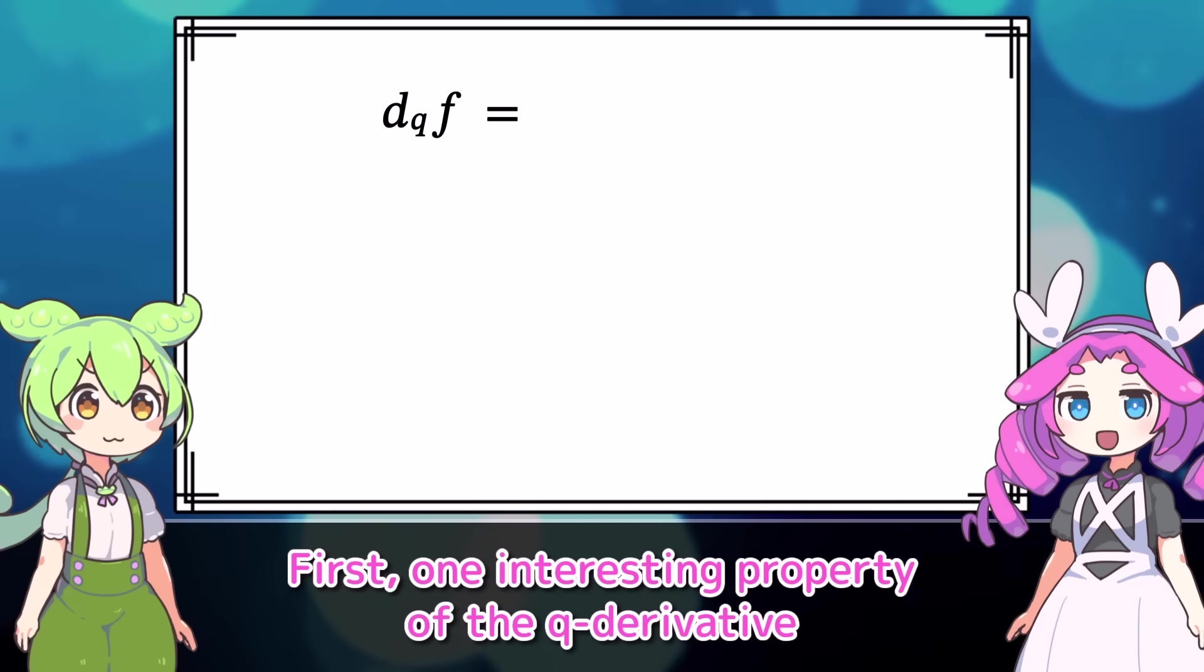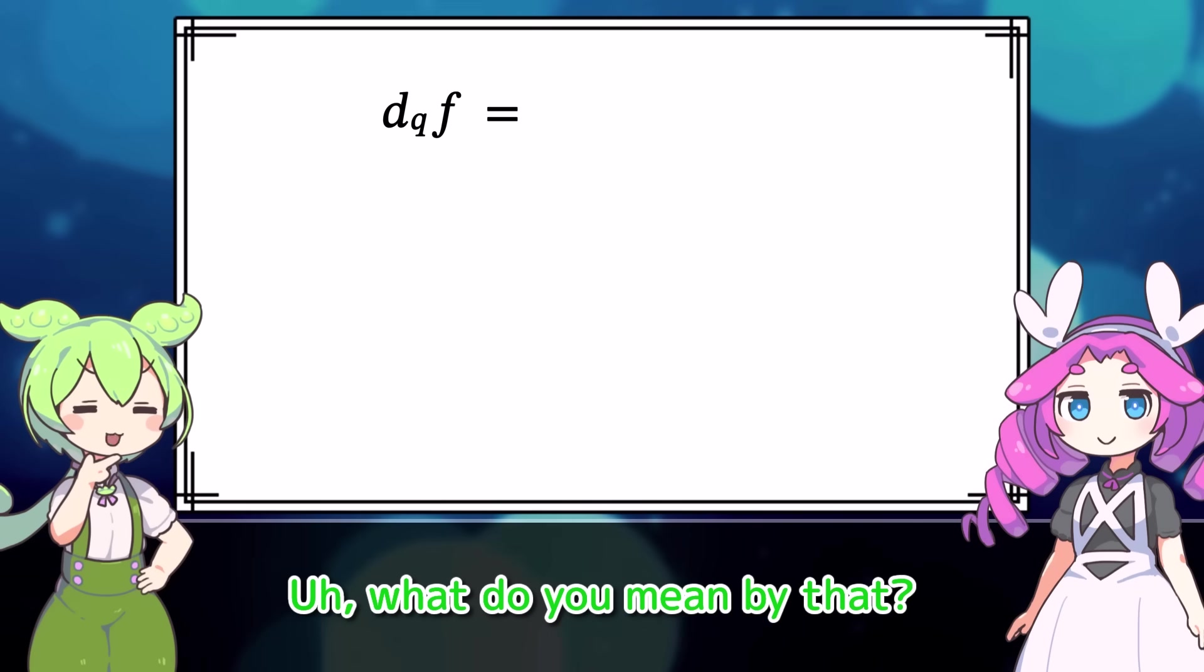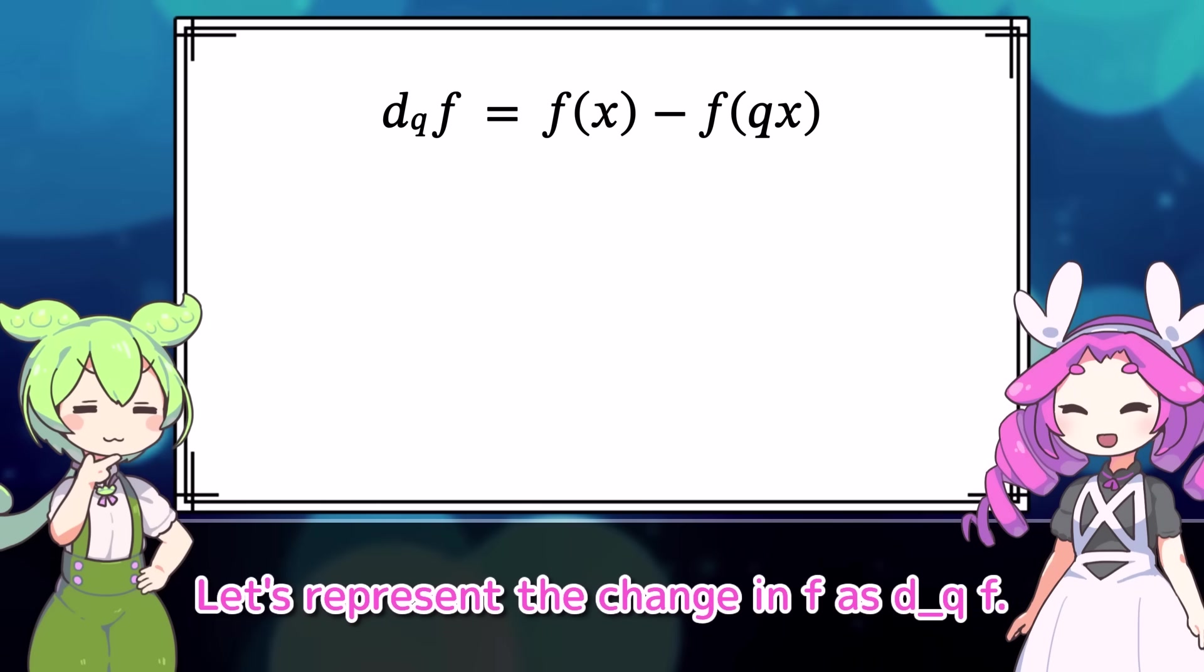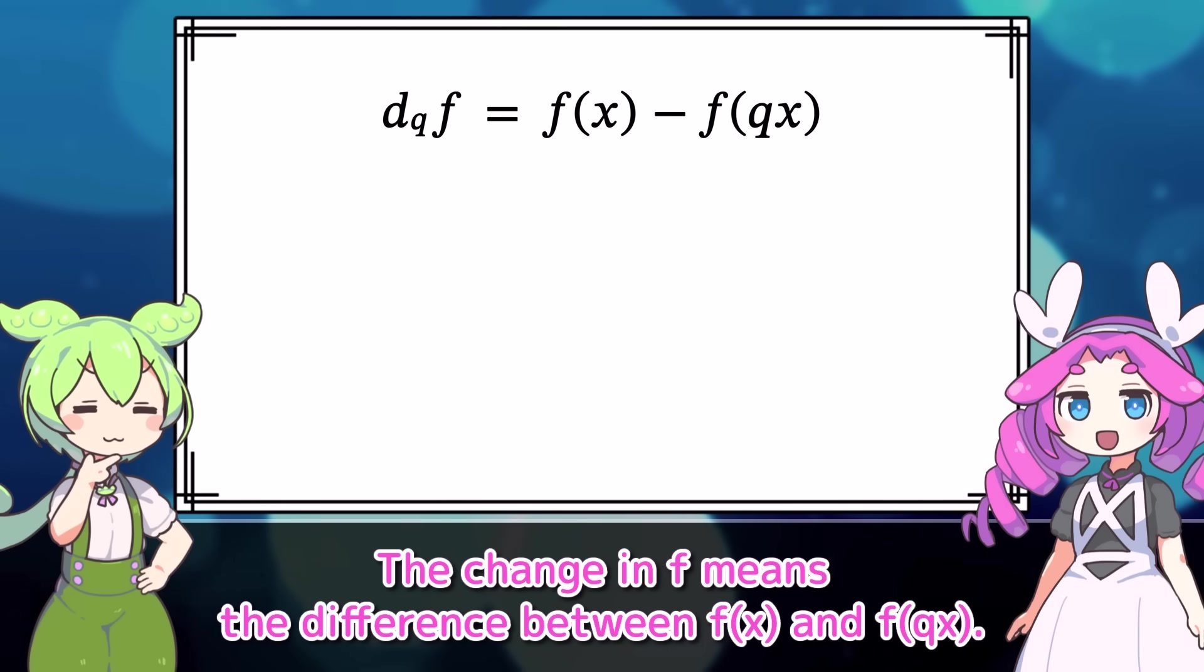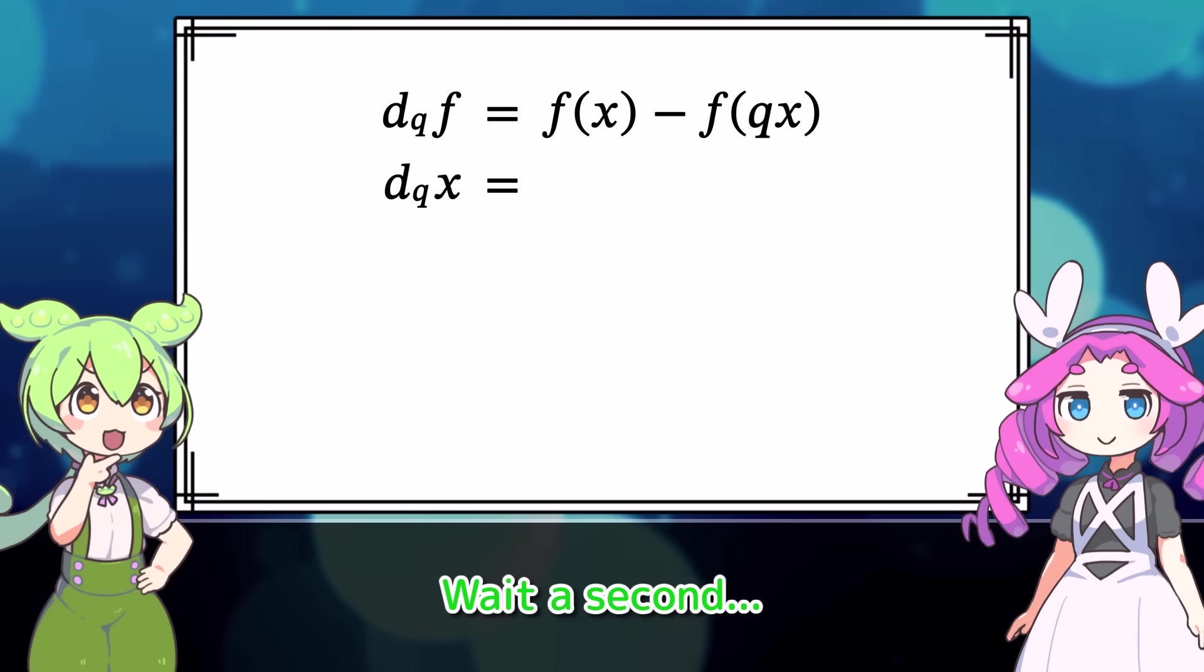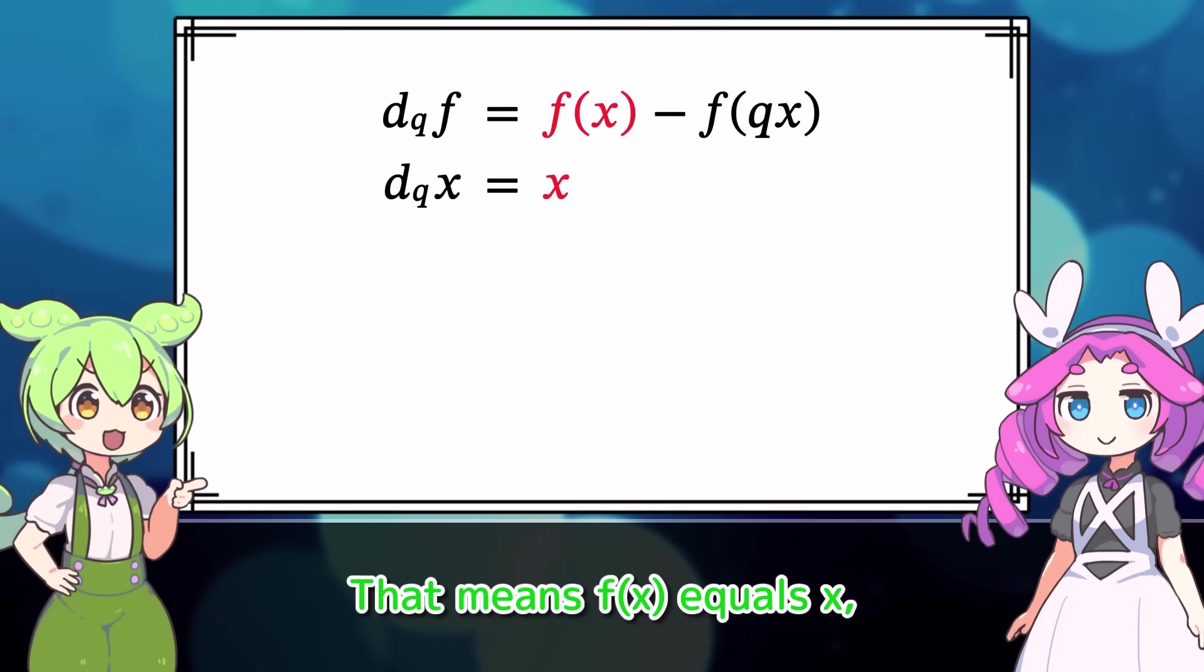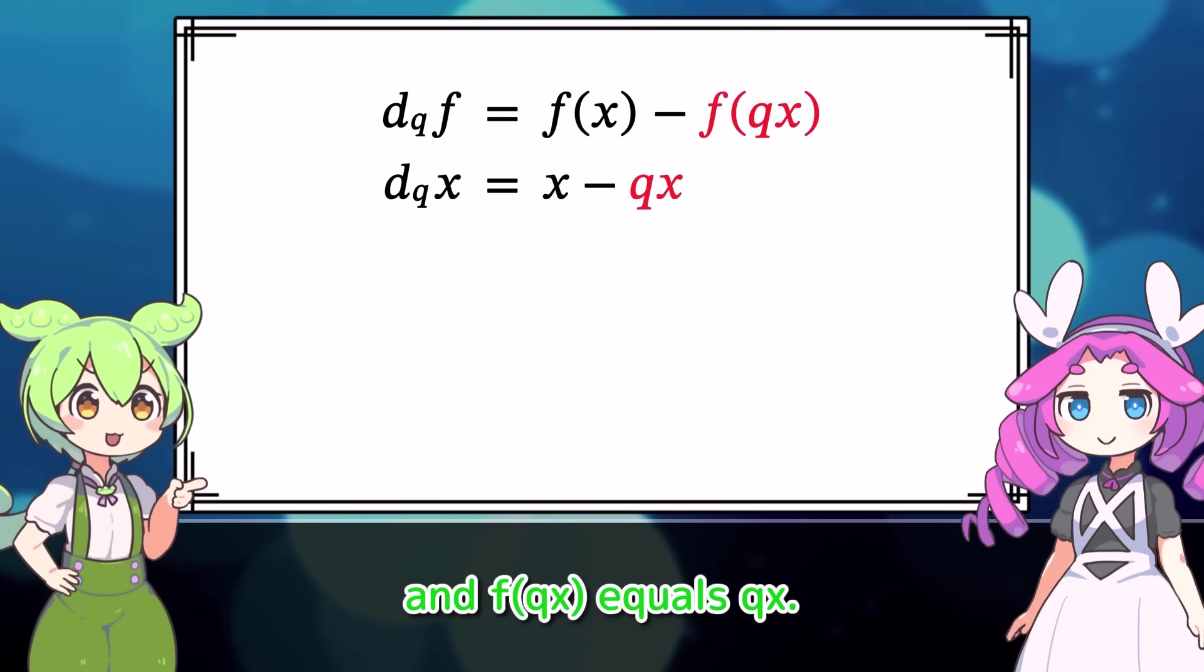First, one interesting property of the q-derivative is that the numerator and denominator can be defined separately. What do you mean by that? Let's represent the change in f as dqf. The change in f means the difference between f of x and f of qx. Then, what about the change in x itself, dqx?